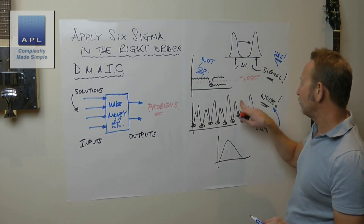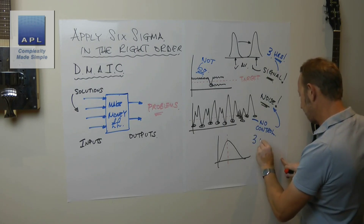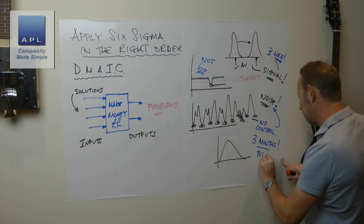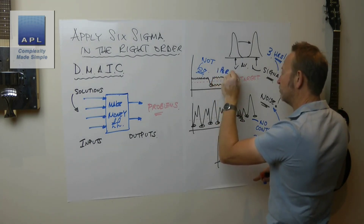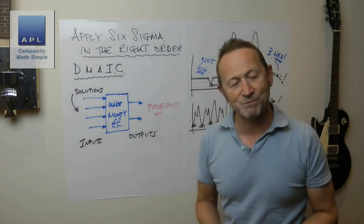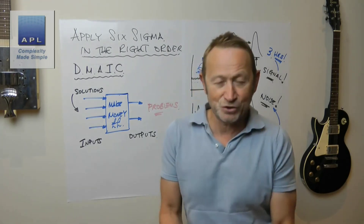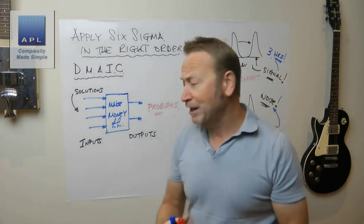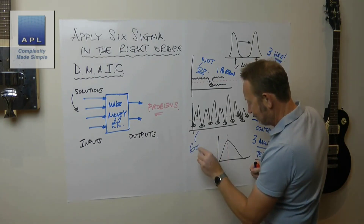How long will it take to fix an uncontrolled process? It's not going to take three hours — it's going to take three months. This will need a team. The one-person, hours-long fix applies up here. A team is needed for the noisy process because this is about policies and procedures: your maintenance policies, training policies, raw material purchasing policies, the targets you set — all kinds of things. This is hard yards, but this is a Six Sigma project.